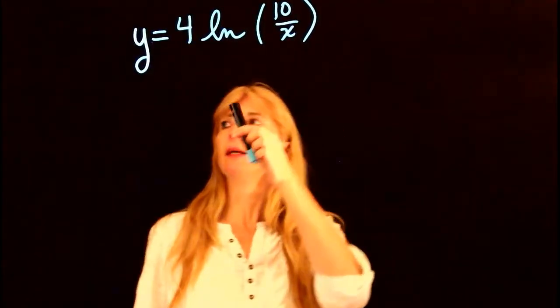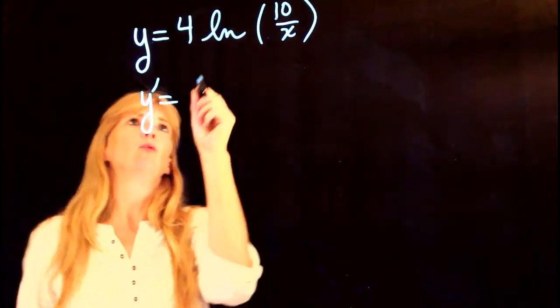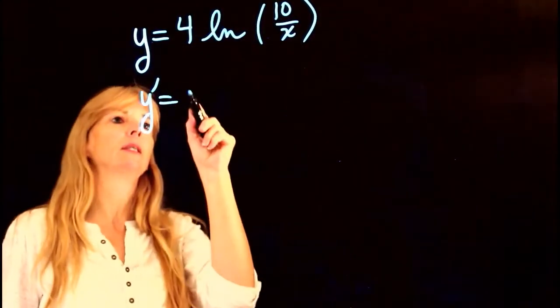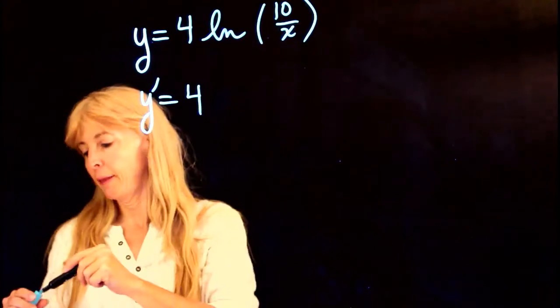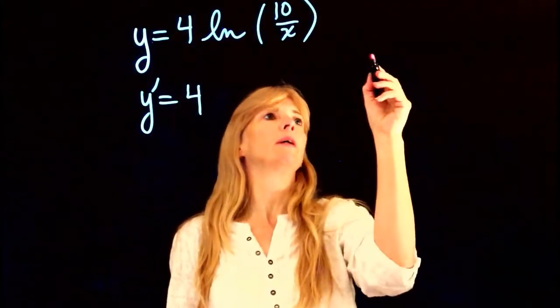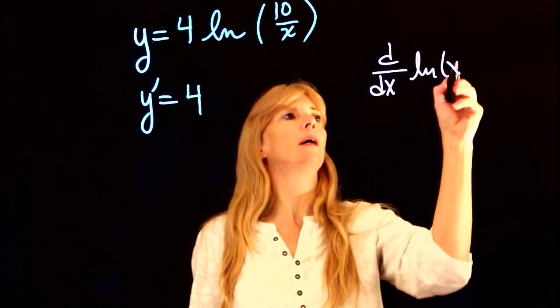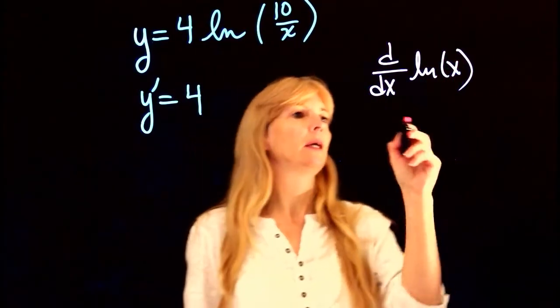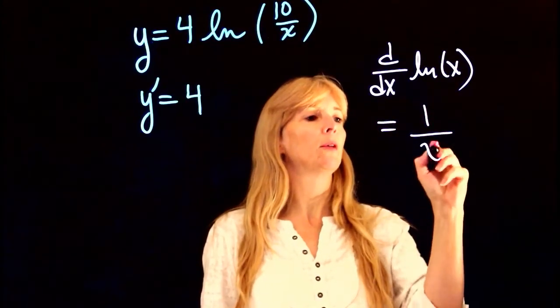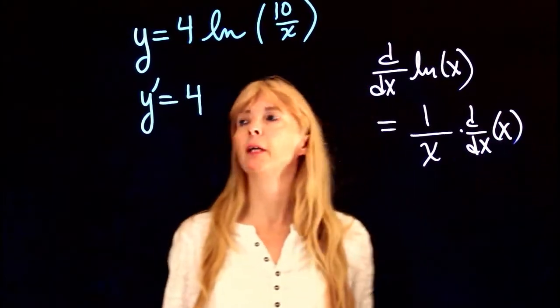All right, so we want to find this derivative. The 4 is just a constant out front, and I remember the rule that the derivative of ln of anything equals 1 over the anything times the derivative of the anything.